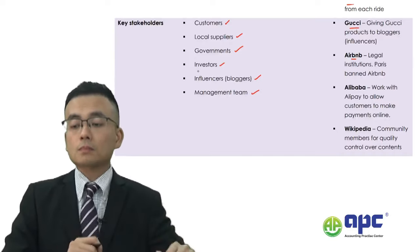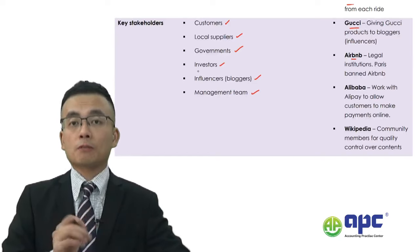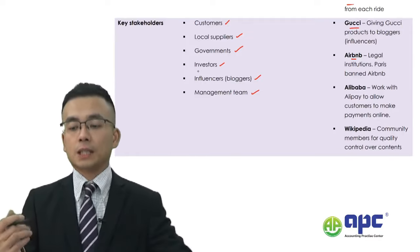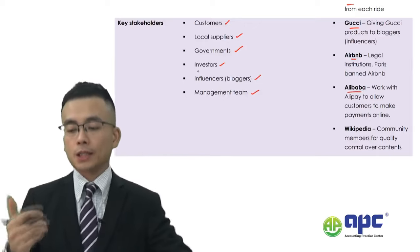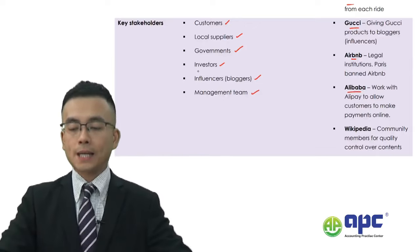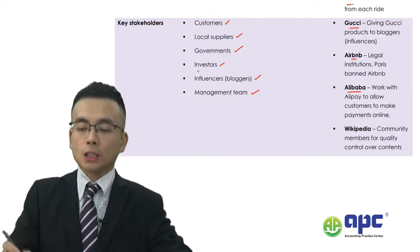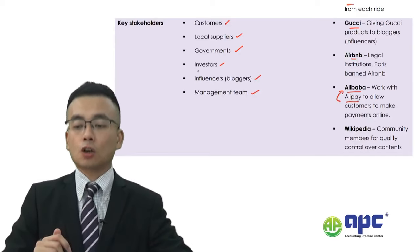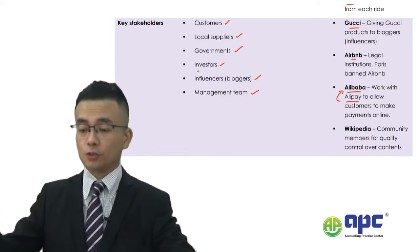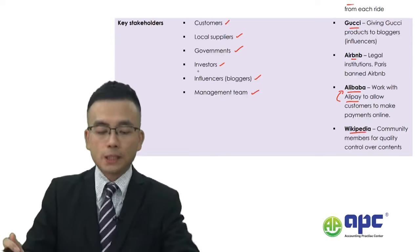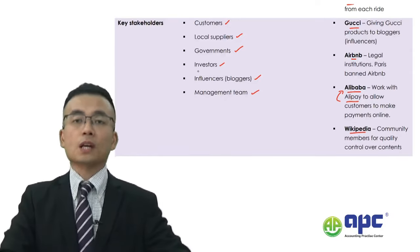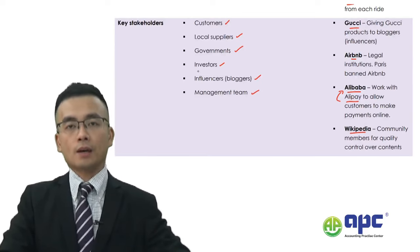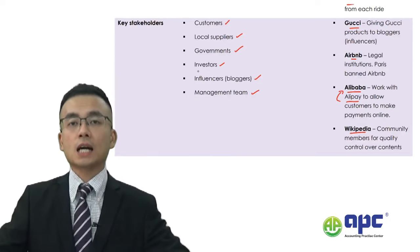Consider also how different governments affect operations — for example, the Paris government has banned Airbnb, and Google is banned by the Chinese government. Alibaba needs to work with Alipay to allow customers to make payments online, and must think about how to integrate customers into different platforms. Wikimedia considers its customers — called community members — and makes sure they quality-control inputs onto the platform to ensure content is accurate.